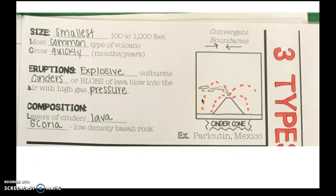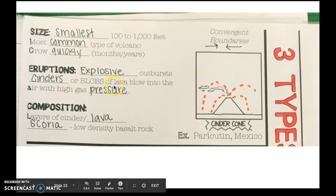Now we're going to talk about the types of volcanoes — we have three. The first is called a cinder cone volcano. This will be two lectures broken together, so make sure you watch part two to complete your notes. Cinder cone volcanoes happen at convergent boundaries. They are our smallest, ranging from 100 to 1,000 feet. This is the most common type of volcano. They grow really quickly within months or years. They have typically really explosive outbursts — cinders or blobs of lava blow into the air with high gas and pressure. They're made of main layers of cinder, lava, and scoria, which is low density basalt rock.